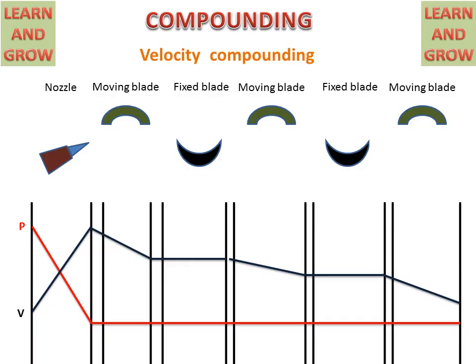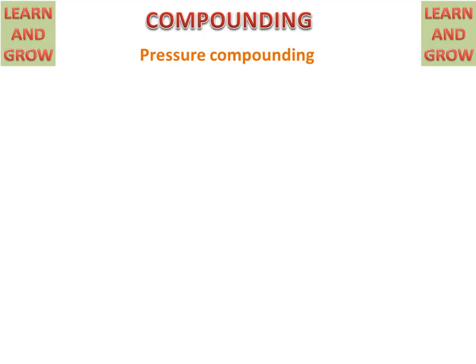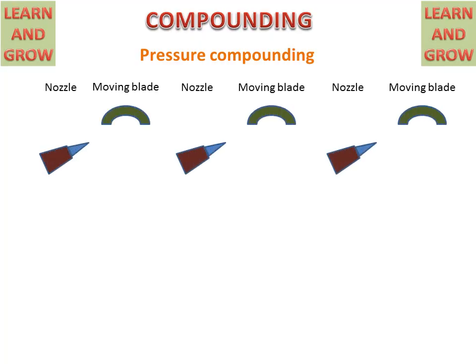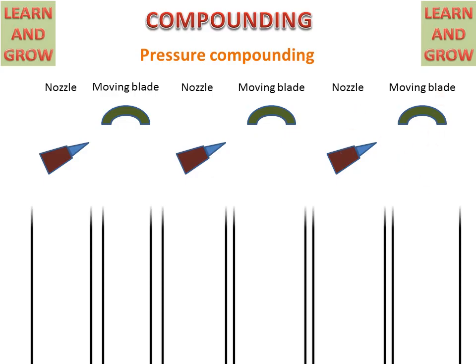In pressure compounding, the arrangement is as follows: firstly a nozzle, then a moving blade, then a nozzle and moving blade, and again a nozzle and moving blade. Now let us discuss the pressure and velocity graph for pressure compounding.